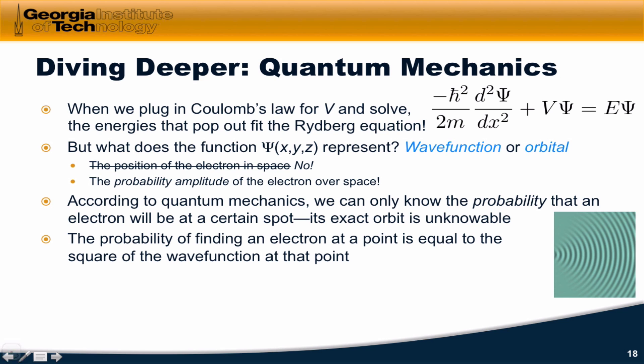It's called a probability amplitude just because the actual probability of finding an electron at a point is equal to the square of the wave function at that point. We can represent that mathematically like this. P is equal to psi squared.